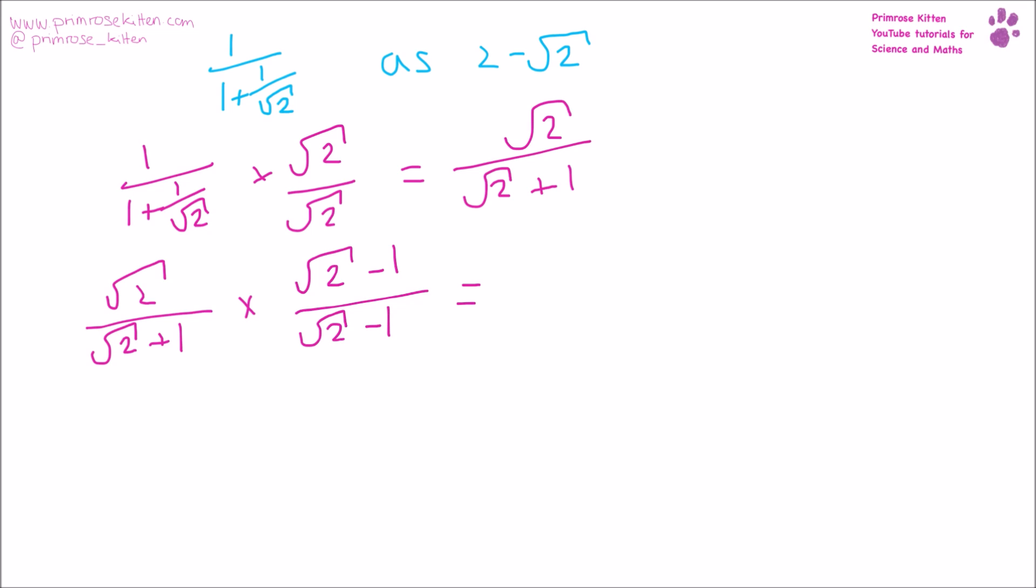And this is going to give me two. Square root of two times square root of two is going to be two. Square root of two minus one is going to be minus square root of two over square root of two times square root of two is going to give us two. One times minus one is going to give us minus one.